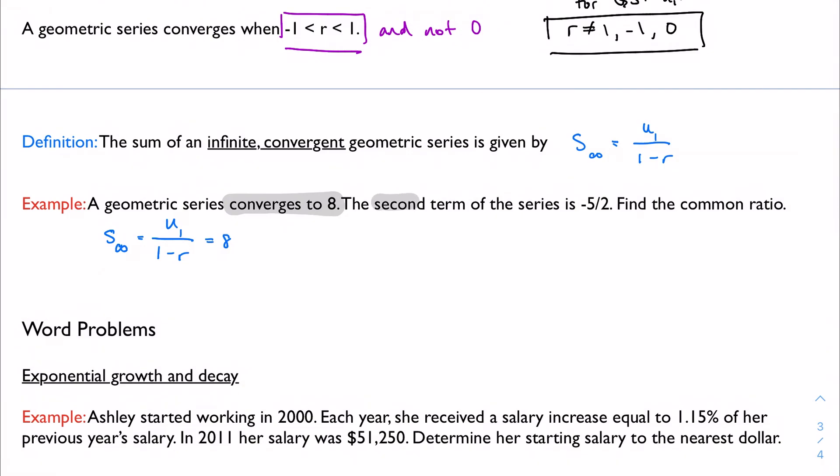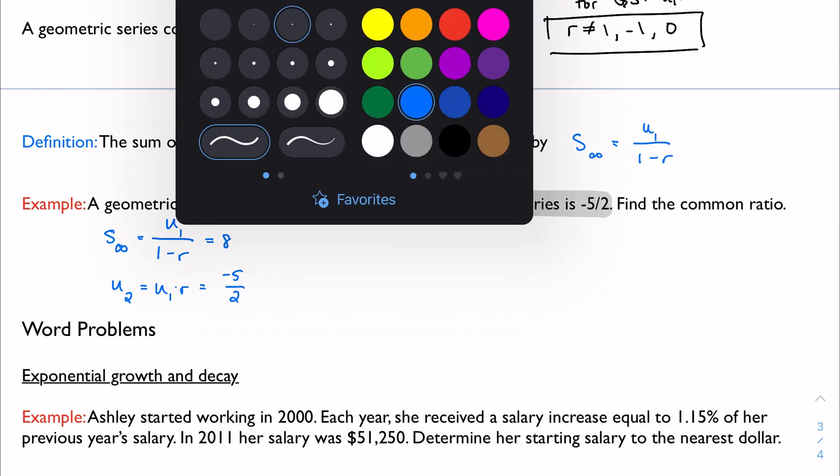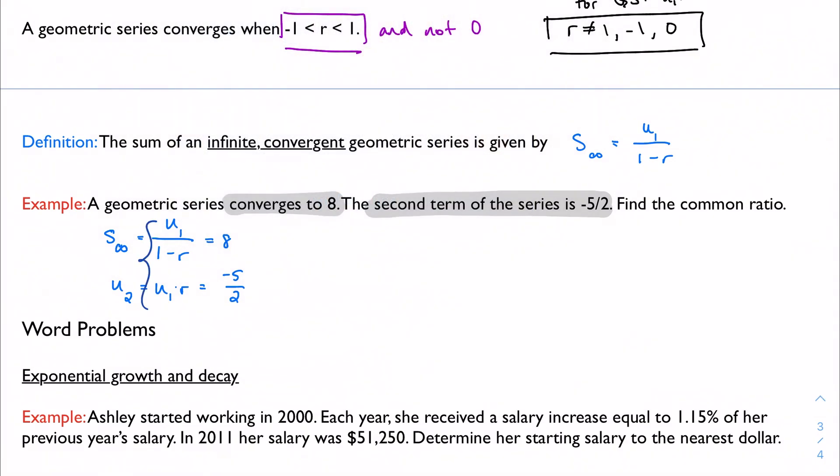We know that the second term of the series is negative 5 halves. So u₂, which is just u₁ times r, is equal to negative 5 over 2. And I want to find the common ratio. I think we can do this. I think this is something that we can absolutely do. I effectively have something like a system again. I'm just going to call this u₁ equals 8 times 1 minus r. And that'll let me make a substitution.